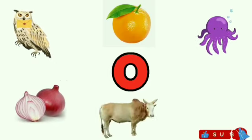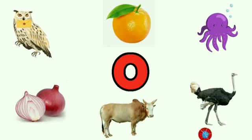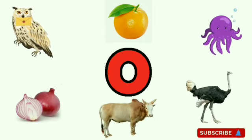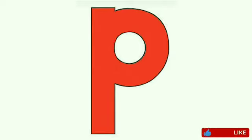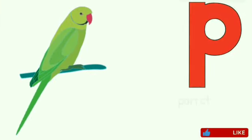Now let's learn together. O for owl. O for orange. O for octopus. O for onion. O for ox. O for ostrich. Let's learn with sound. O as in owl. O as in orange. O as in octopus. O as in onion. O as in ox. O as in ostrich.